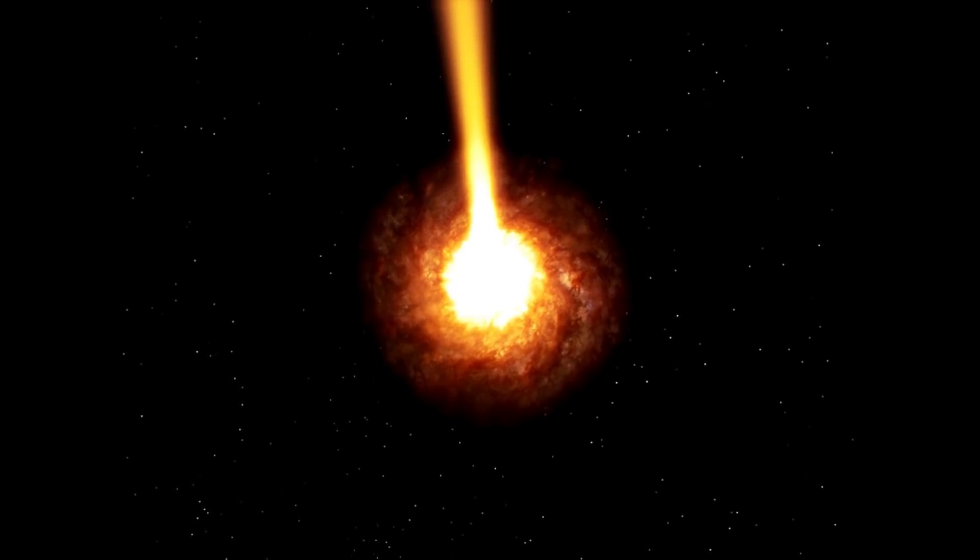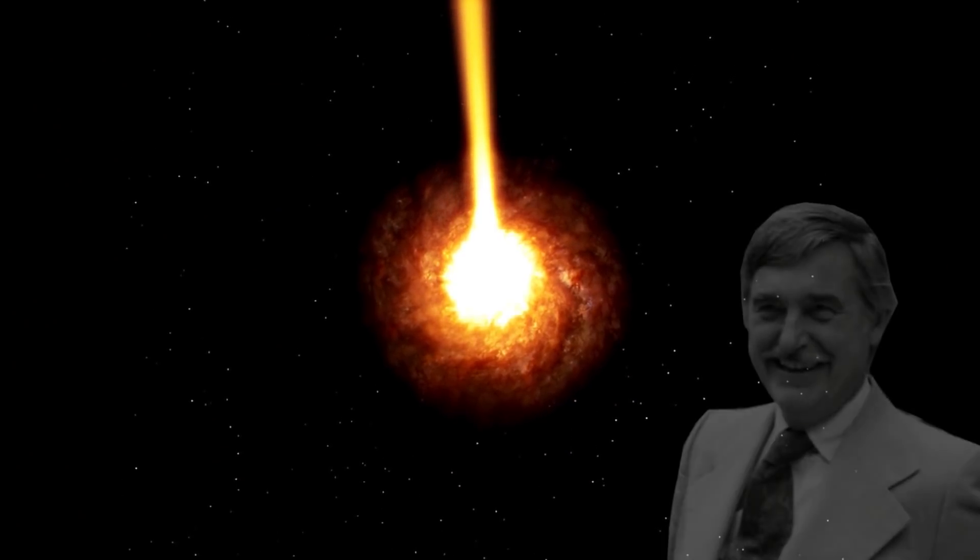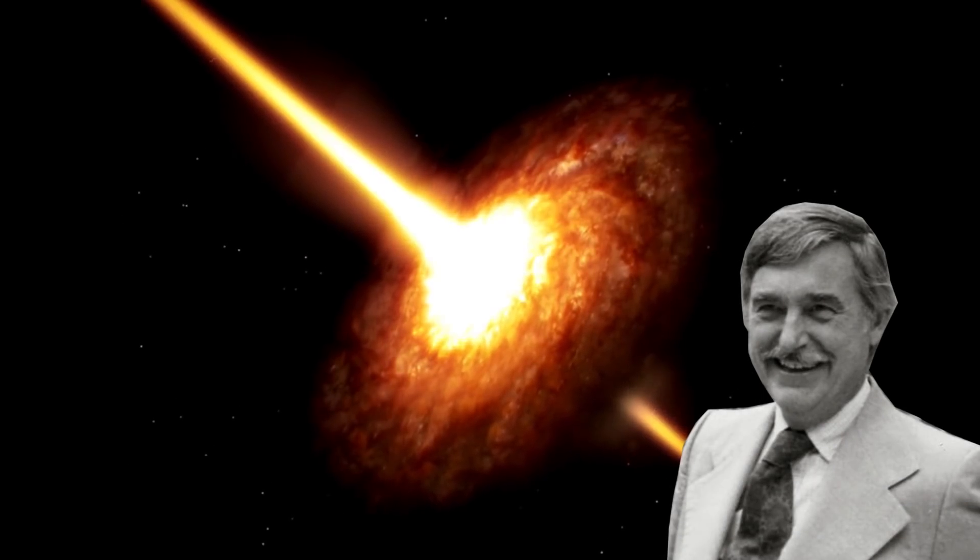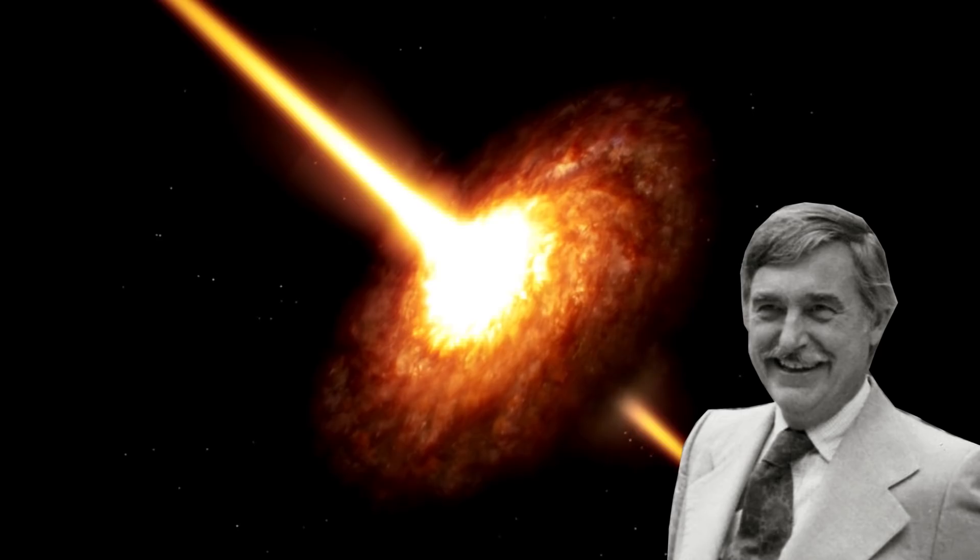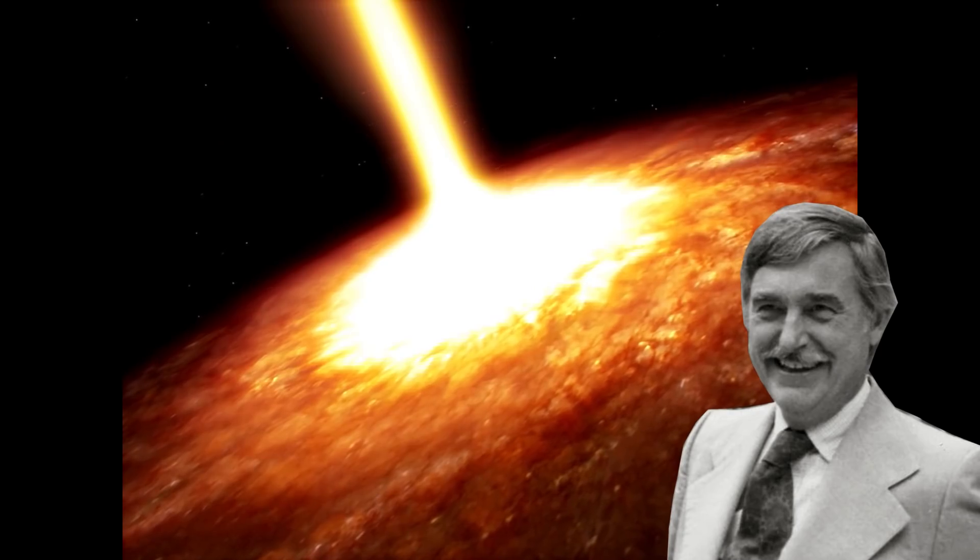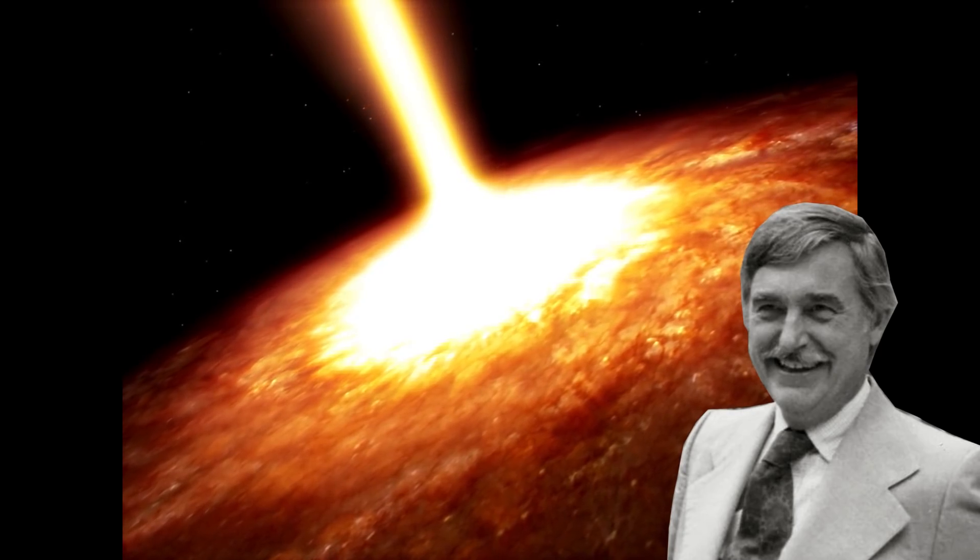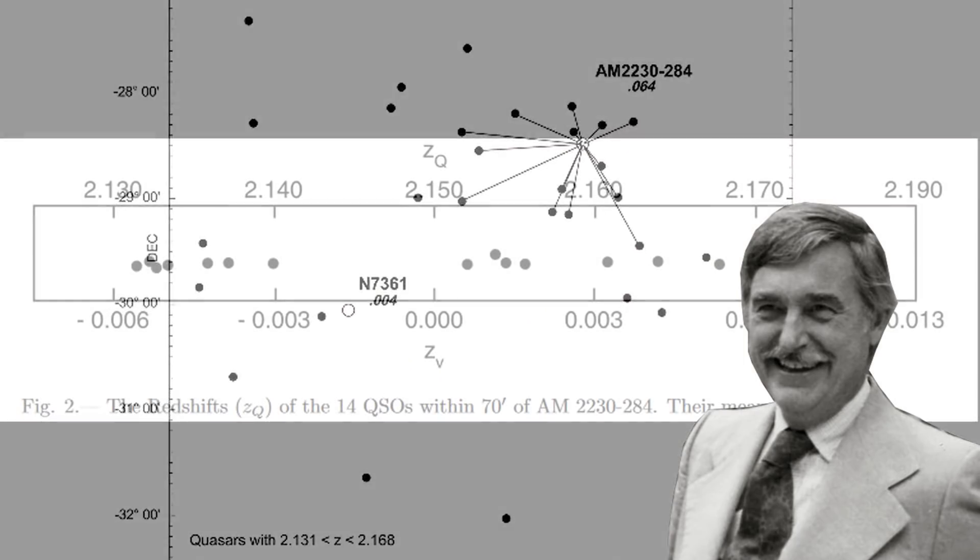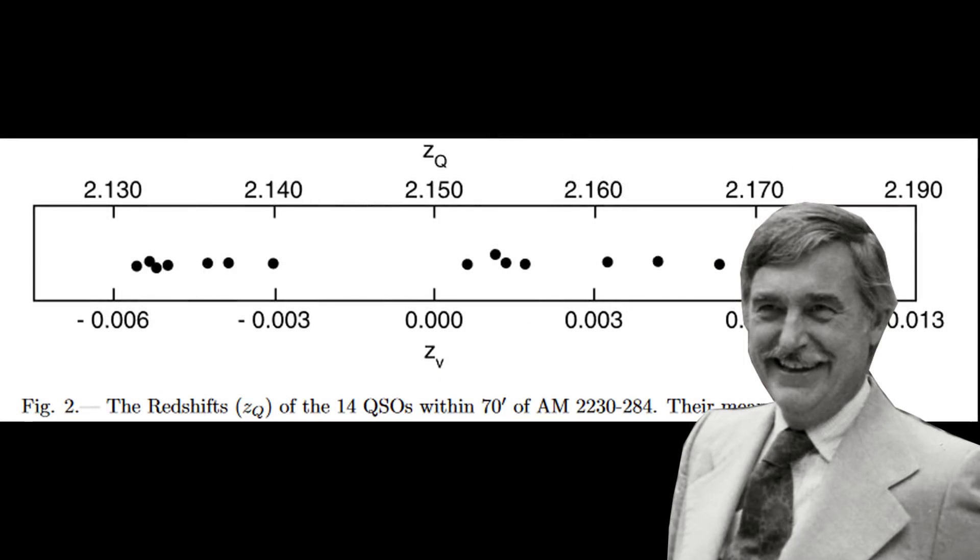In the episode on quasars are not what we think they are, we discussed how Arp became fascinated by quasars. He studied so many that he started to see a pattern. These quasars were always associated with active x-ray emitting galaxies and tended to be distributed along and away from the axis of rotation of the galaxy.